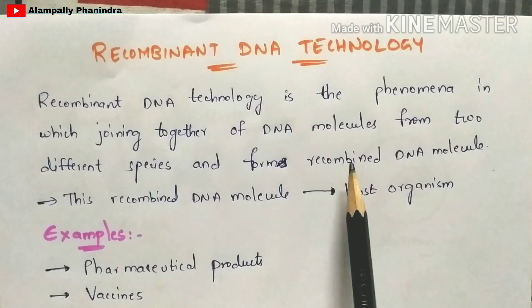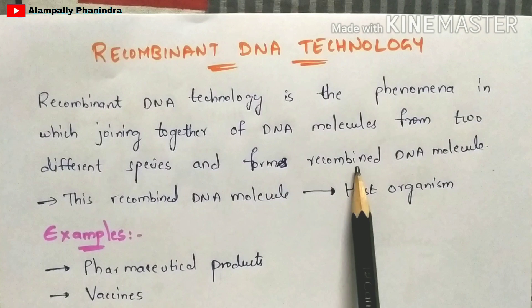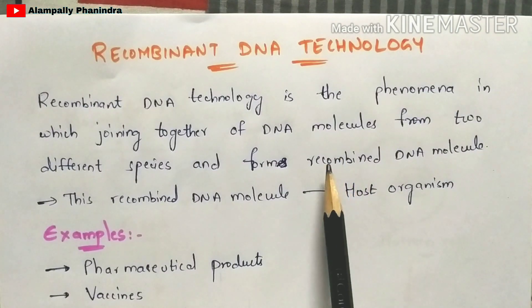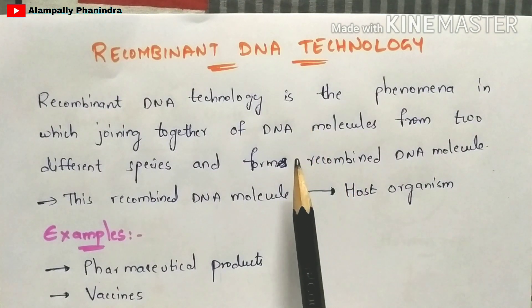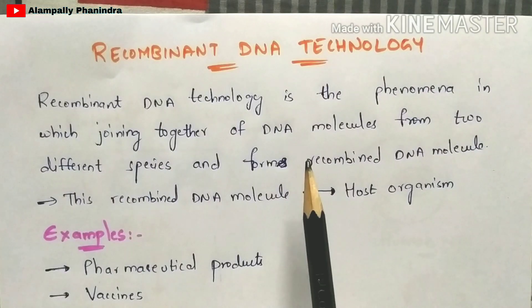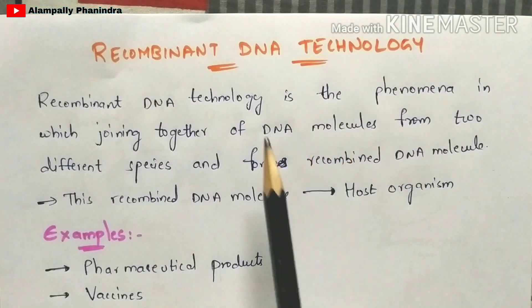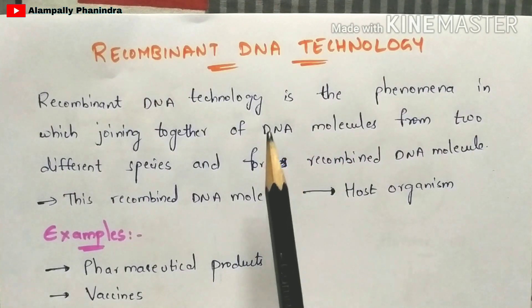It is called a recombinant DNA molecule because we are recombining both DNA molecules that have been extracted from two different species. I'm going to explain this in detail by taking an example.